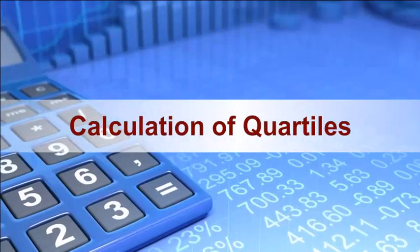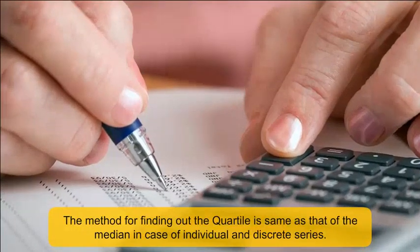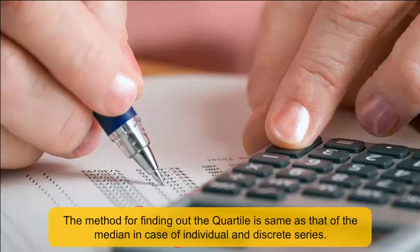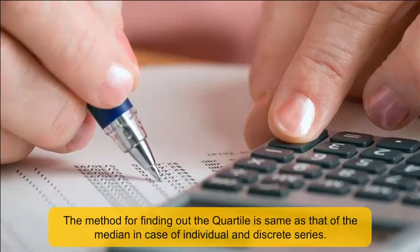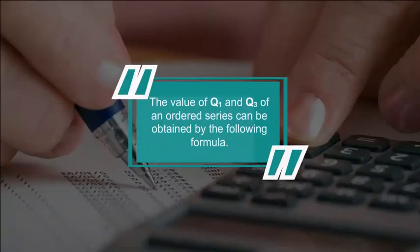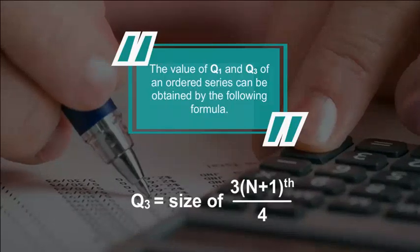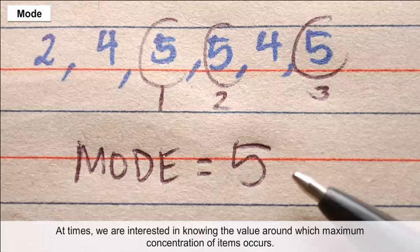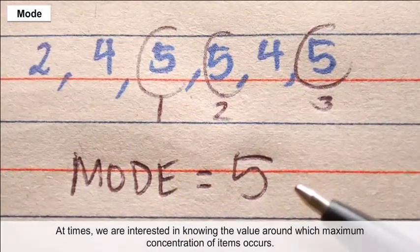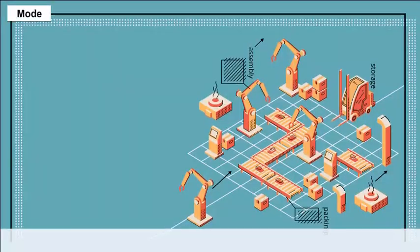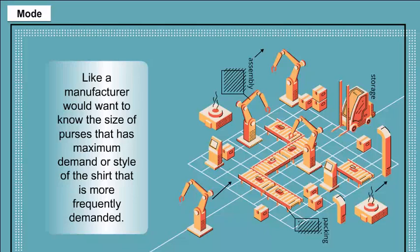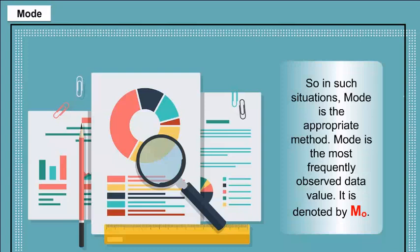The method for finding quartiles is the same as that of the median for individual and discrete series. The values of Q1 and Q3 of an ordered series can be obtained by formula. Mode is used when we are interested in the value around which the maximum concentration of items occurs — for example, a manufacturer wanting to know the most demanded purse size or shirt style. Mode is the most frequently observed data value, denoted by MO.